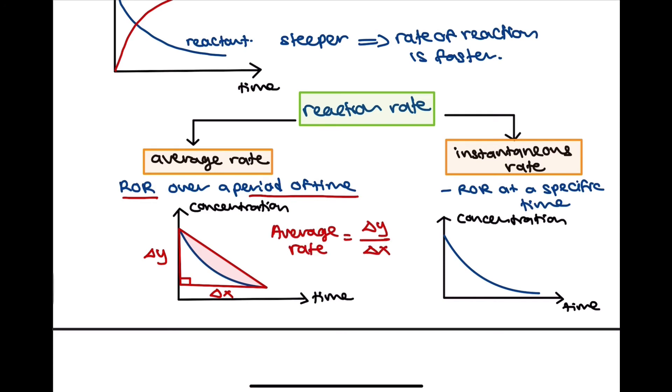Instantaneous rate of reaction is the rate at a specific time. How do we calculate this? Let's say we're focusing on time T1. At point T1, draw a tangent and calculate the gradient for this tangent. Label this as Y1 and the change in X as X1.